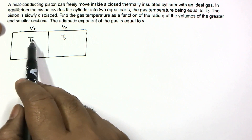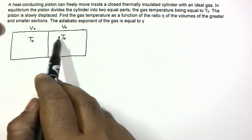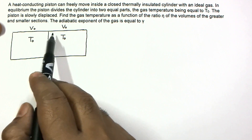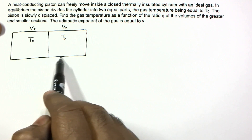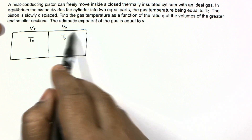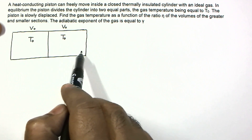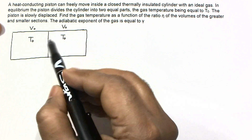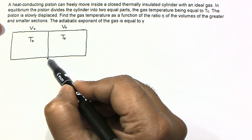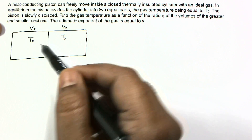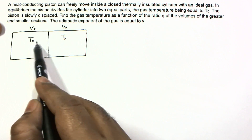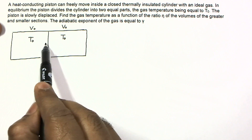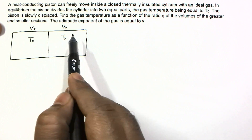Initially, the temperatures are equal and the piston is heat-conducting. The cylinder is thermally insulated, so no heat can be transferred to the outside. Because the piston moves slowly and is heat-conducting, we can assume that at any instant the temperature on both sides will be equal due to heat conduction through the piston.